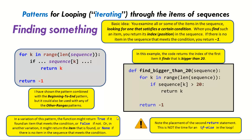In a variation of this pattern, the function might return true if it found an item meeting the condition — maybe you don't care what the item is, just whether there is one — or false if not. Or you could return the item itself and use none to indicate no item in the sequence meets the condition.